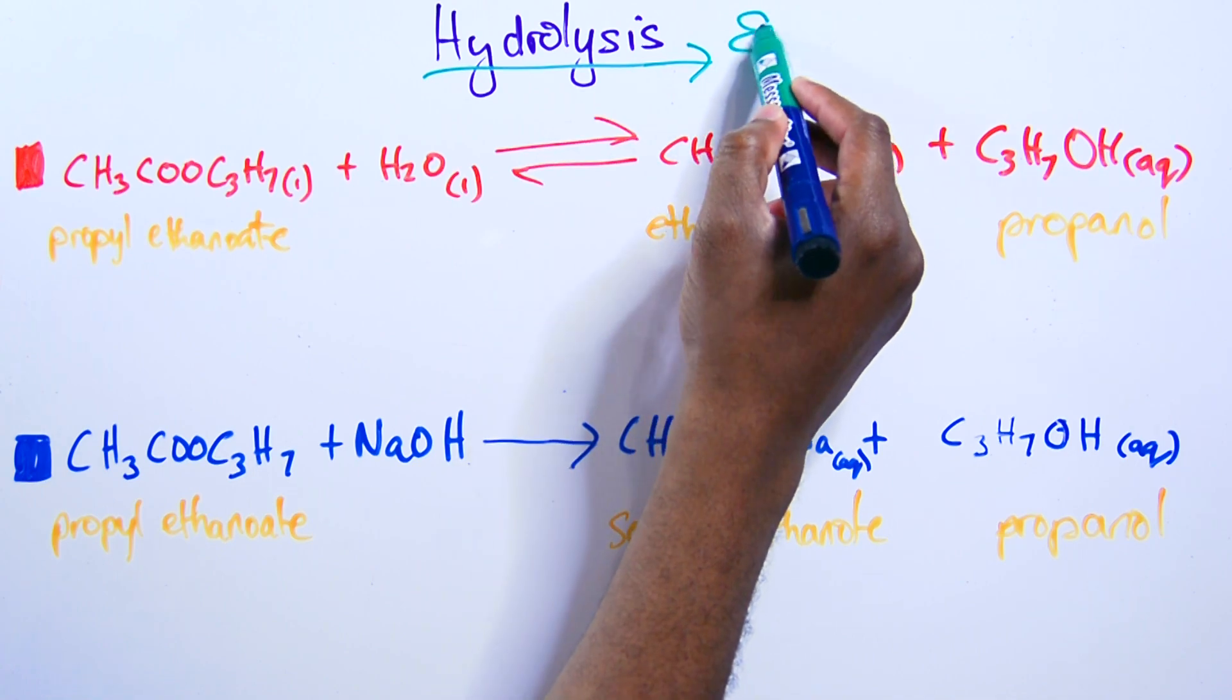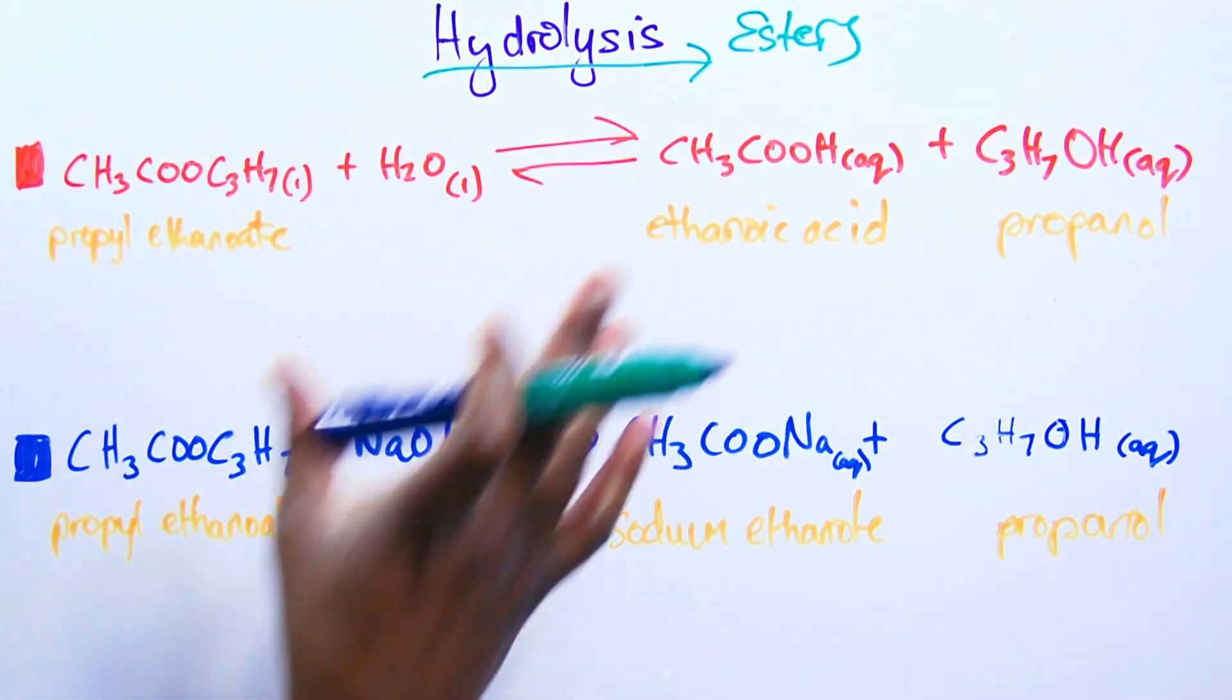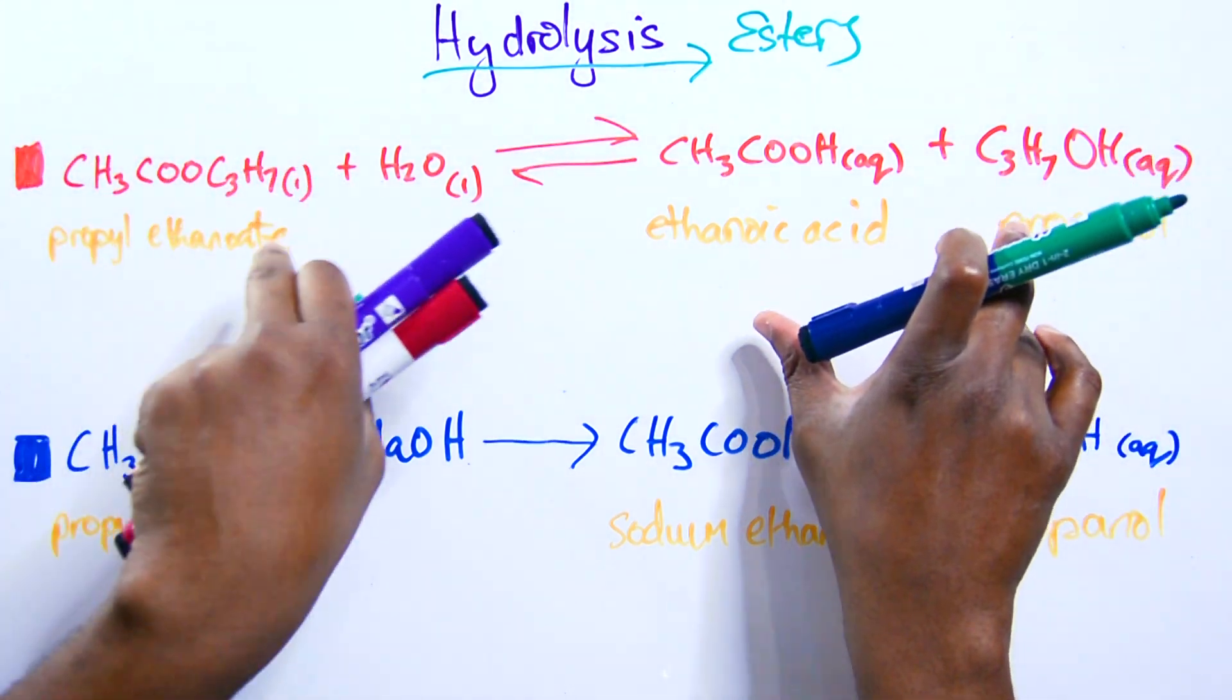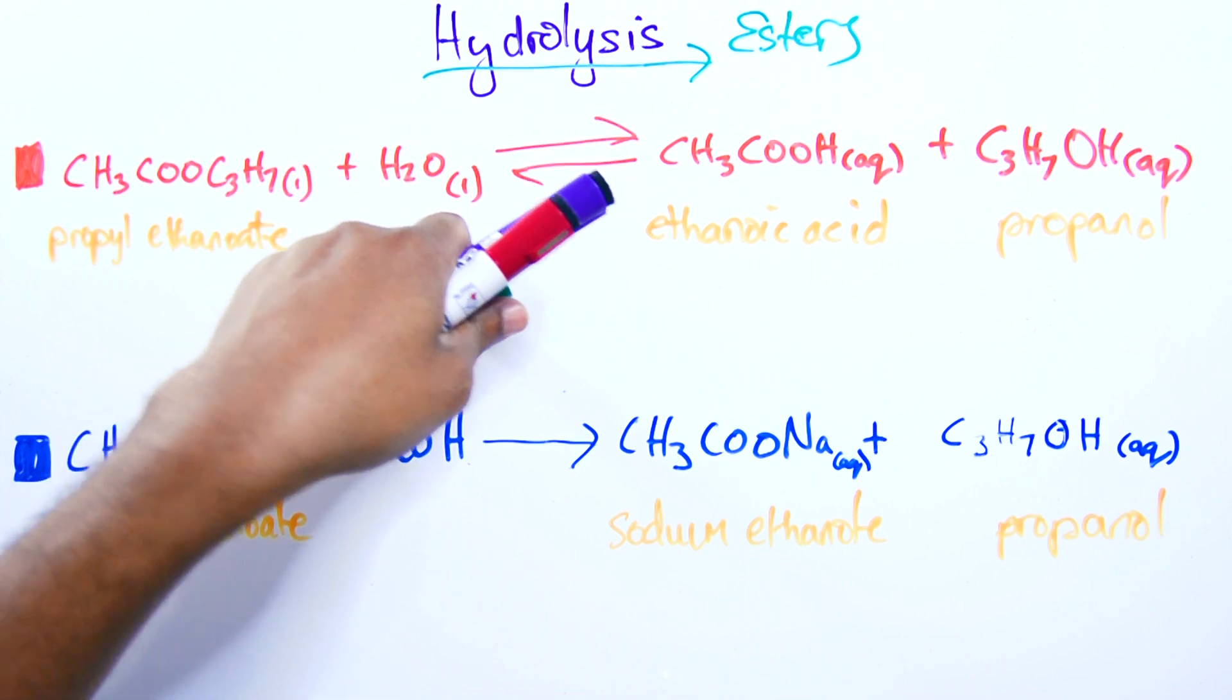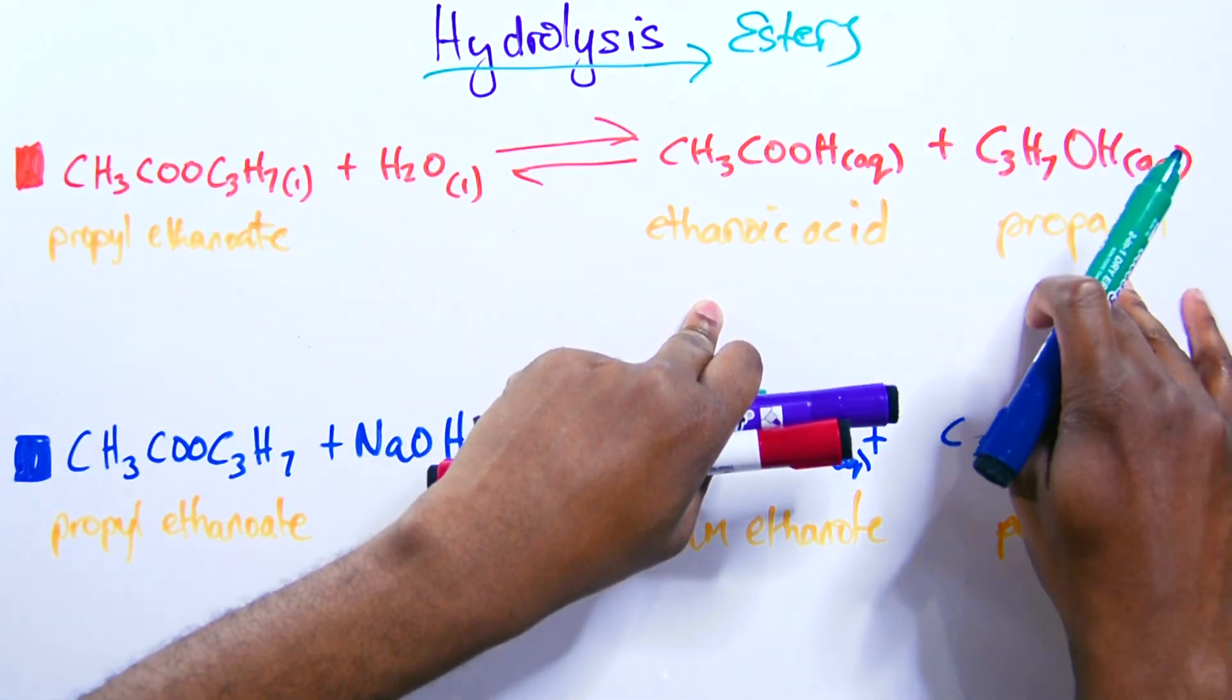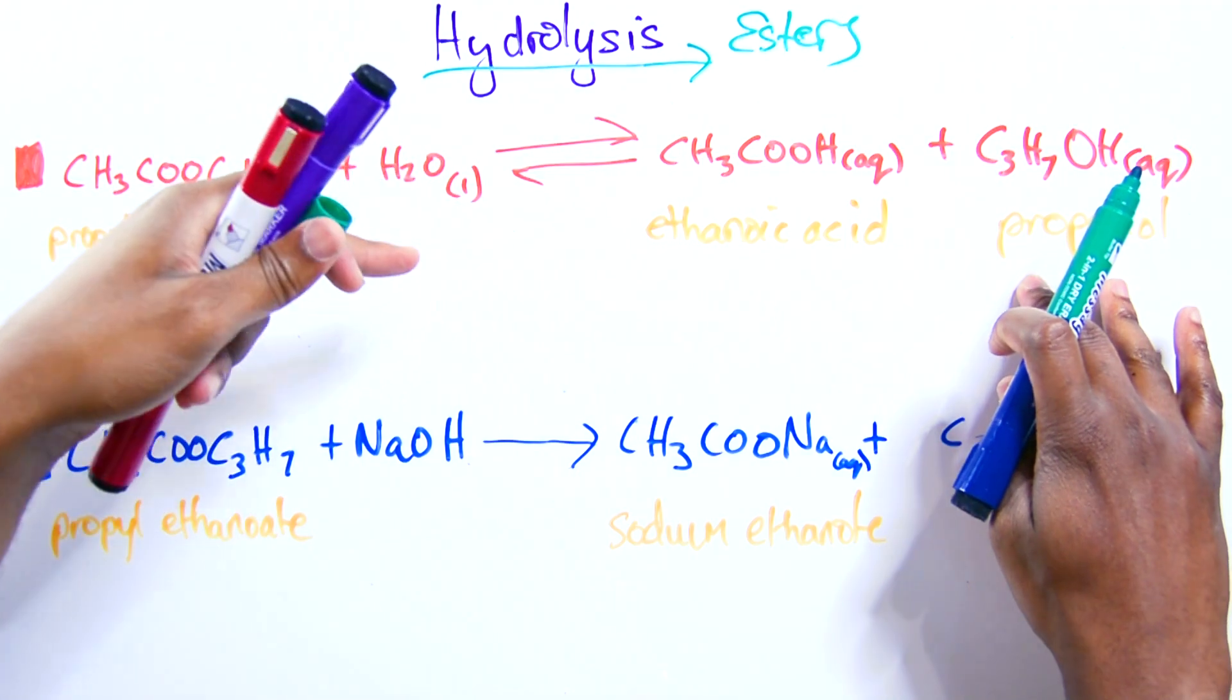What else do you need to know about esters? Well you need to know about the hydrolysis of esters. Well this is basically how we form esters. But you just write the reaction in the other direction. So you're taking the ester and you're adding back the water. And you're going to get back the ethanoic acid and the propanol.